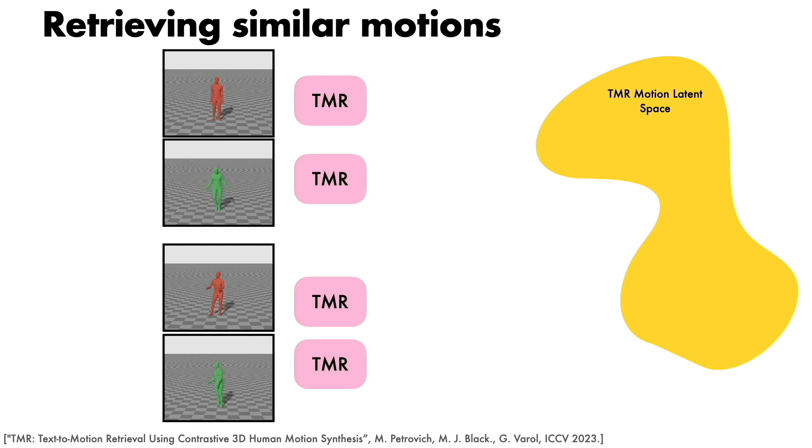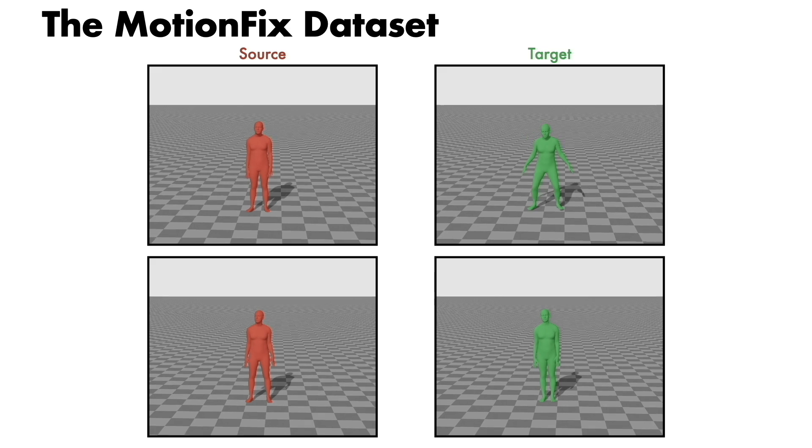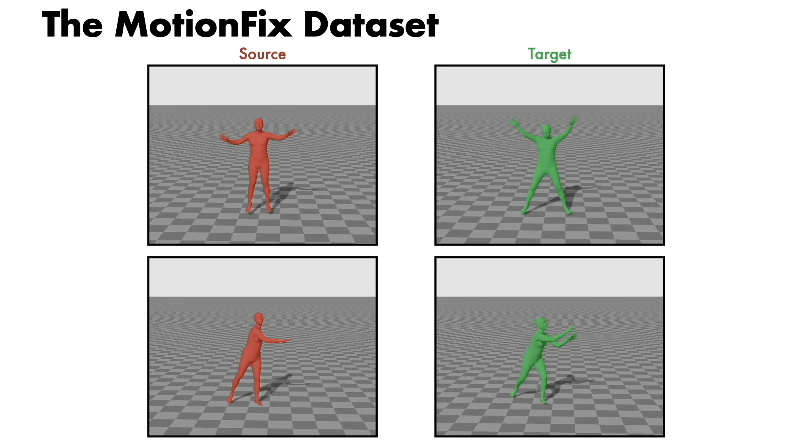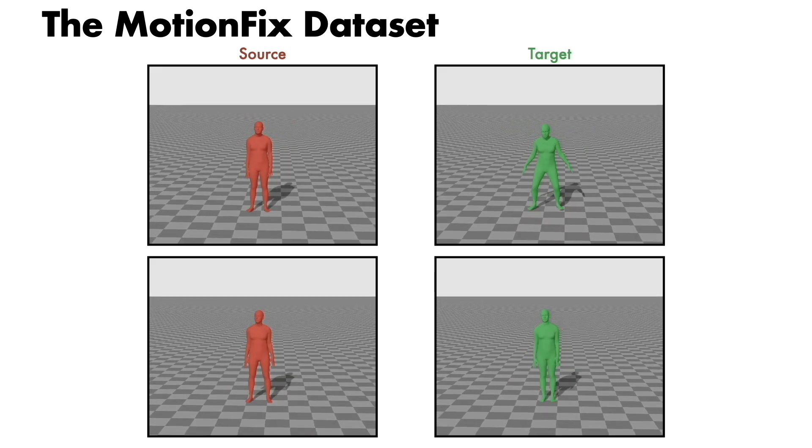We observe that recent motion encoders encode similar motions closely. This process retrieves suitable candidate motion pairs from unlabeled mocap collections, whose differences can be described by text.